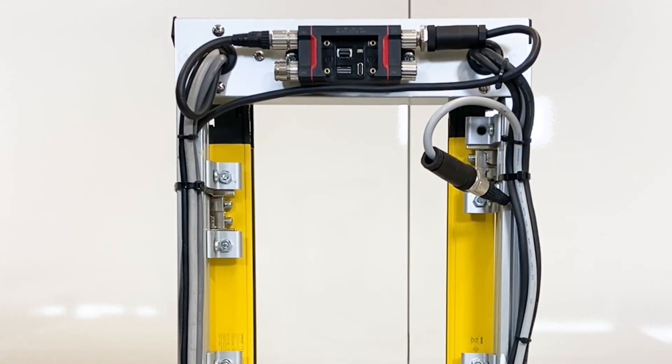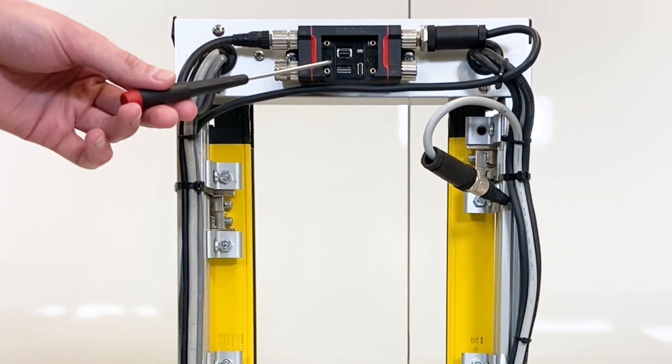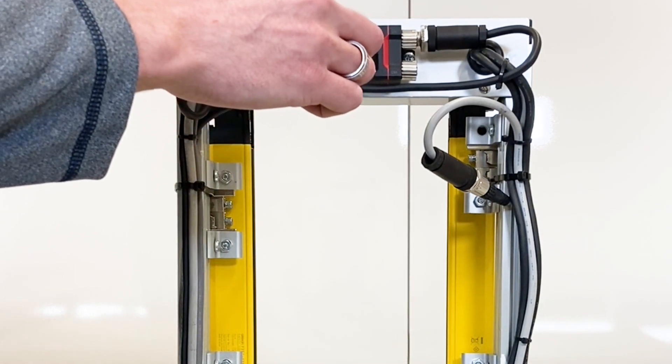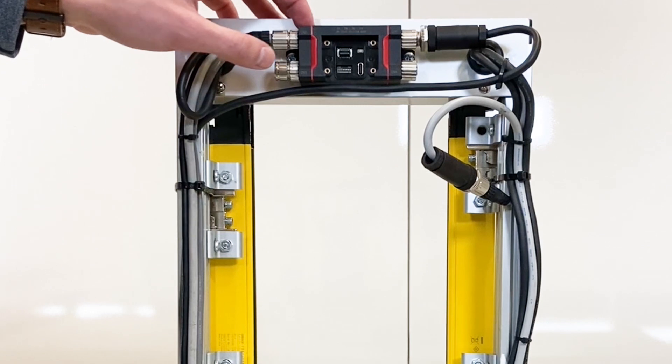Once removed, you will be able to see the DIP switches that you will need to program your safety light curtain. In order to program EDM, you're going to want to make sure DIP switch number 1, 2, and 3 are in the on position.